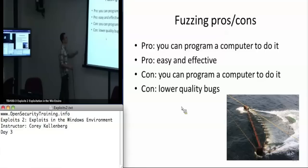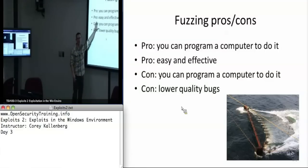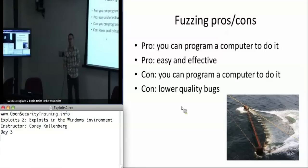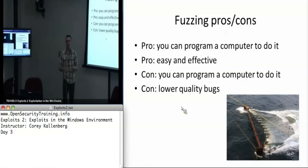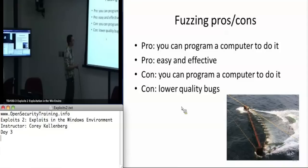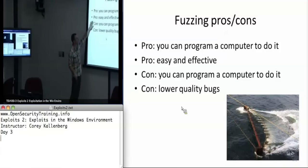The pro is you can program a computer to do it. You can make it a parallel process and increase the rate at which you're finding bugs by using more and more computing power, and computing power is a lot cheaper than people power. The other pro is it still works.